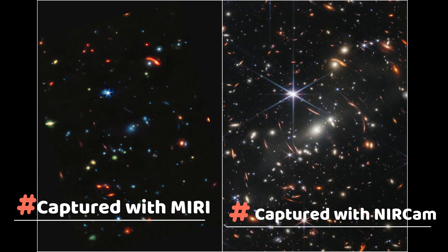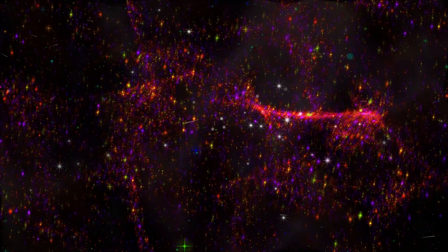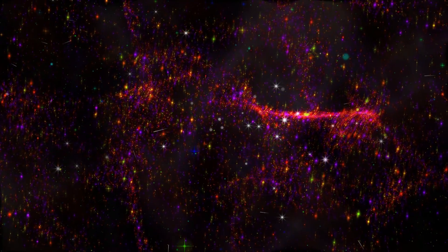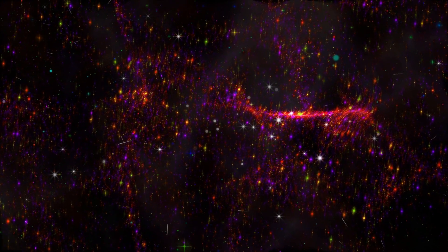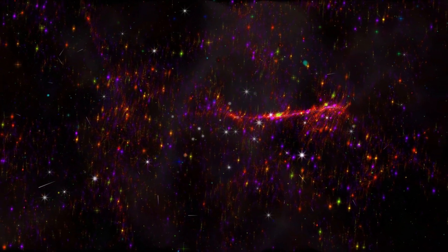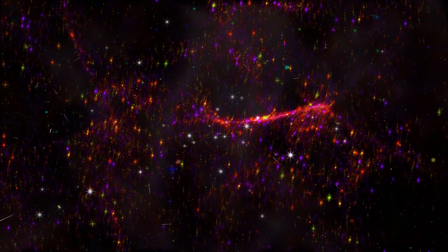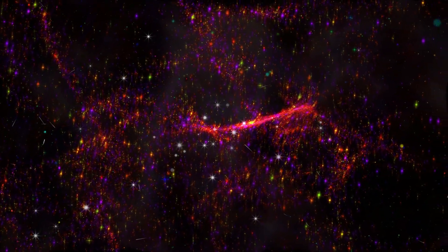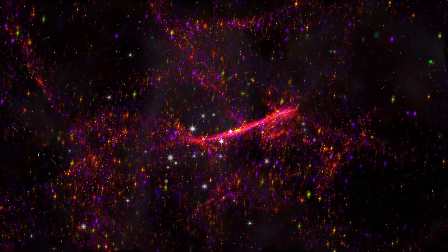Behind it, however, are some more ancient galaxies. This first image from NASA's JWST is the deepest and sharpest infrared image of the distant universe to date.